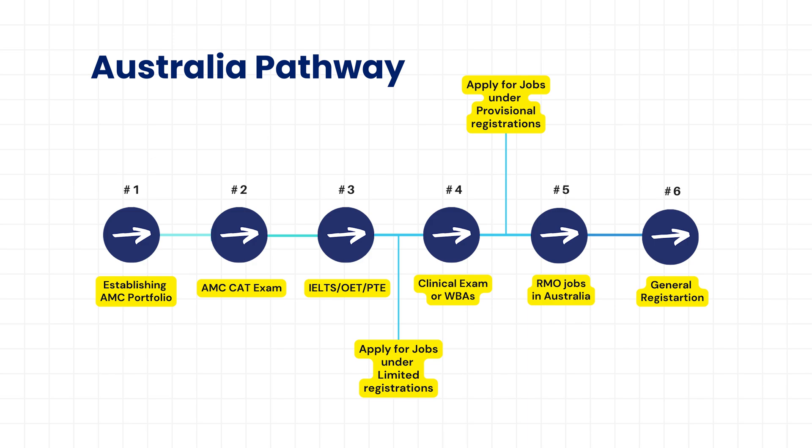After you pass your AMC part one exam, you can give your OET, IELTS or PTE exam. Once you get the eligible scores, you can apply for jobs in Australia under limited registration. Or the second option is after you finish your AMC MCQ CAT exam, you can give your second part of the AMC exam, that is AMC clinical.